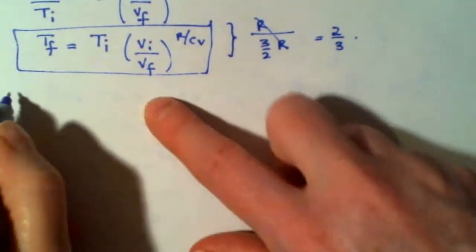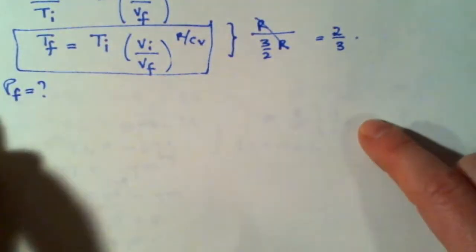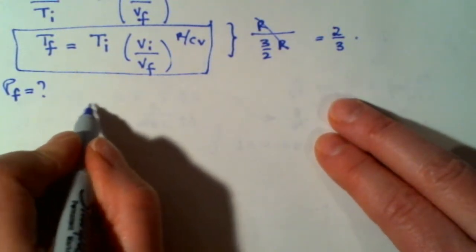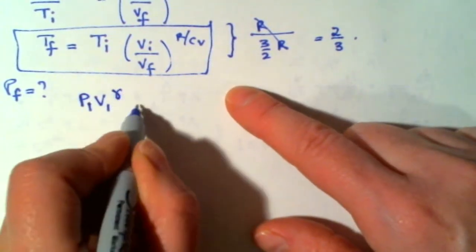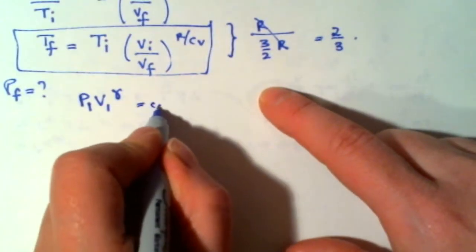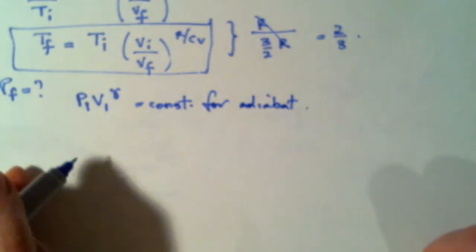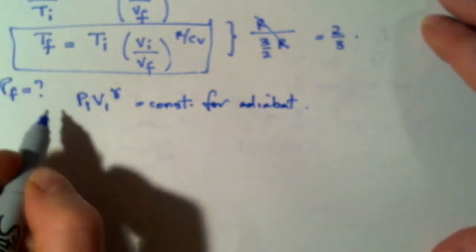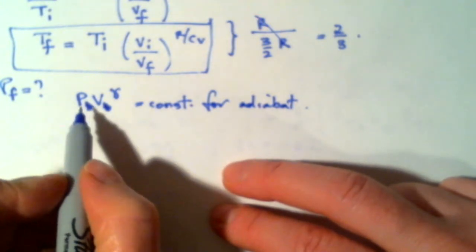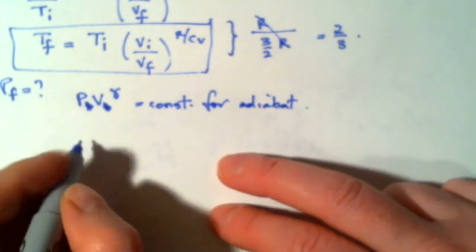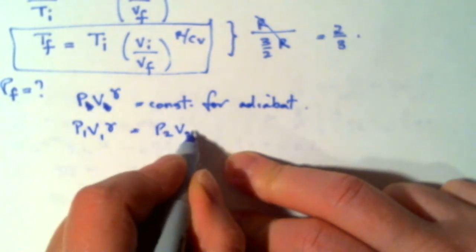So that gives me t final, v final, and then I need to know what is p final. So in here, you make use of the formula that pv gamma is a constant for an adiabat. In the same way that pv is a constant for an isotherm. And so that means that p1 v1 gamma is equal to p2 v2 gamma.